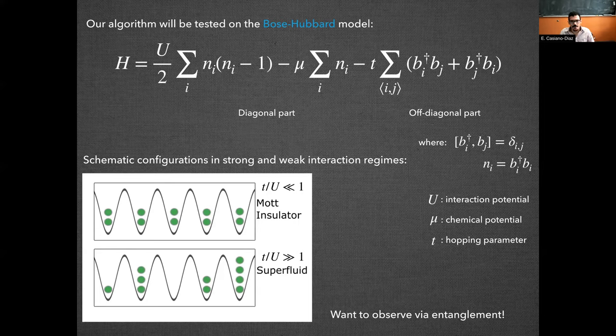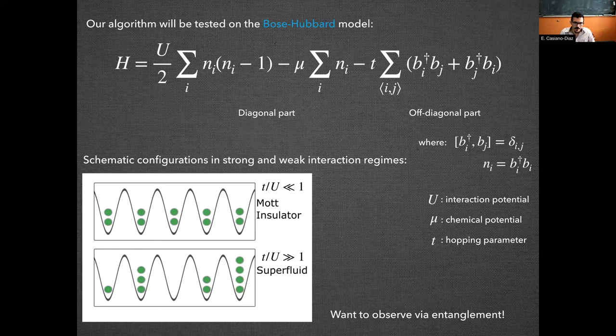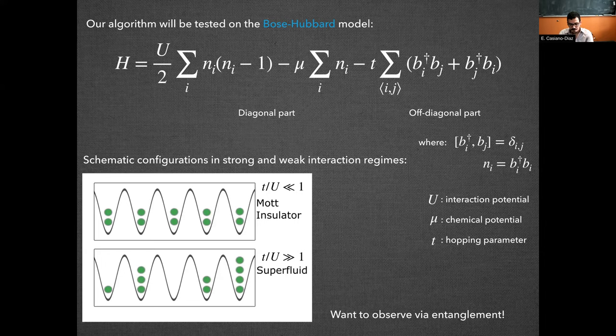On the bottom left, we can see a schematic configuration of the Bose-Hubbard model phases in the very strong interaction regime and the weak interaction regime. So essentially, for very strong interactions, we get a Mott insulator and for weak interactions, we get a superfluid. And we would like to eventually observe these phase transitions or these phases via entanglement entropies.